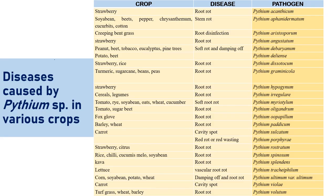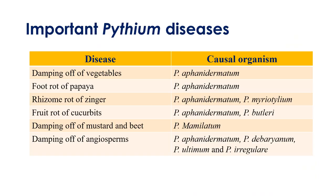Pythium species cause diseases on various crops including strawberries, soybeans, beets, peanuts, and potatoes. Important diseases include: damping off of vegetables caused by Pythium aphanidermatum; foot rots of papaya by Pythium aphanidermatum; rhizome rot of ginger by Pythium aphanidermatum and Pythium myriotylum; fruit rot of cucurbits by Pythium aphanidermatum and Pythium butleri; damping off of mustard and beet by Pythium myriotylum; and damping off of angiosperms by Pythium aphanidermatum, debarianum, ultimum, and others.